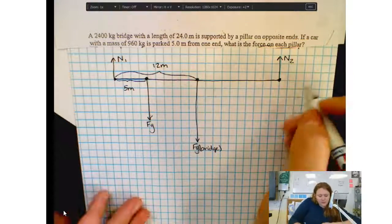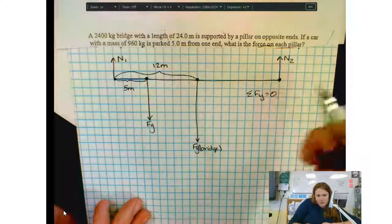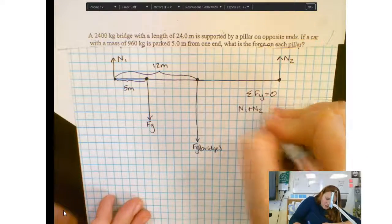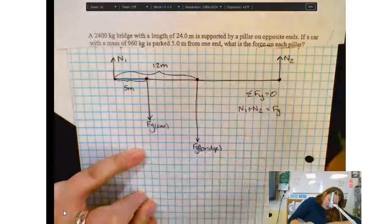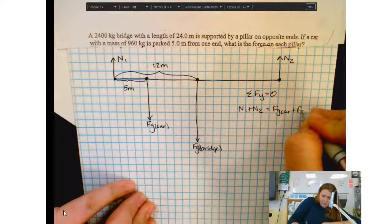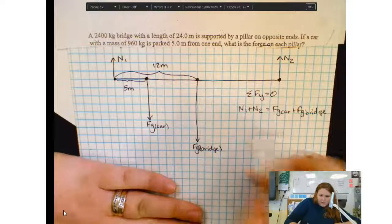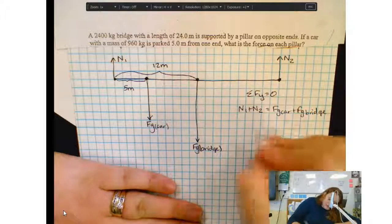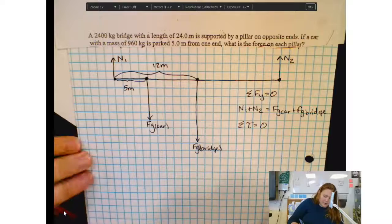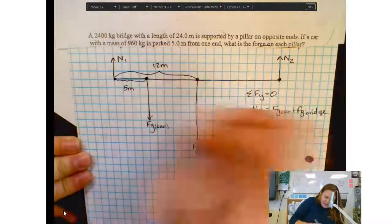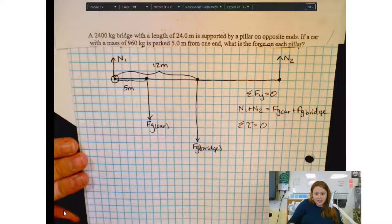Now, when I'm looking at these equations, I want to think the sum of the forces in the y direction are going to be equal to 0. So N1 plus N2 is going to equal the force of gravity of the car and the force of gravity on the bridge. Now, because I'm trying to find N1 and N2, I can't just use this equation. I don't know either one of those, so I need another equation to help me out. So I know that some of the torques also have to equal 0. So my first job is to set my pivot. It does not matter where I set my pivot, but because I normally read left to right, I like to set my pivot on the left side to start these types of problems.